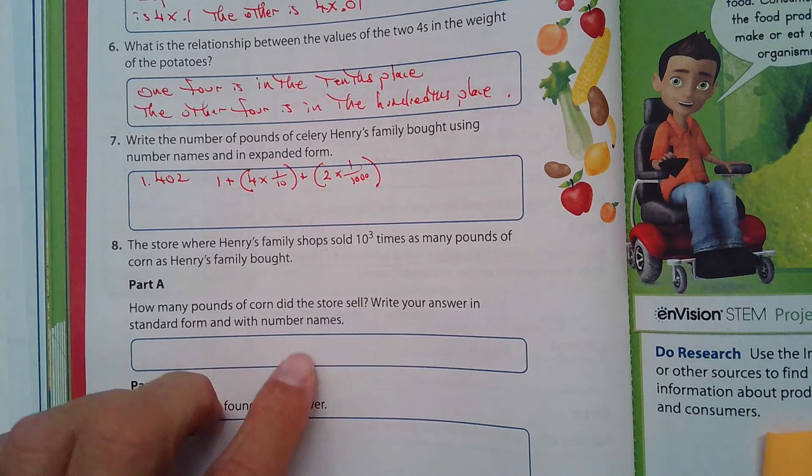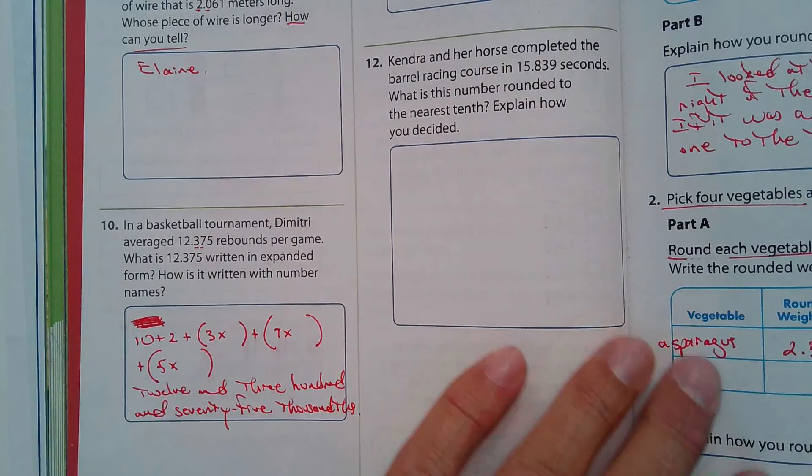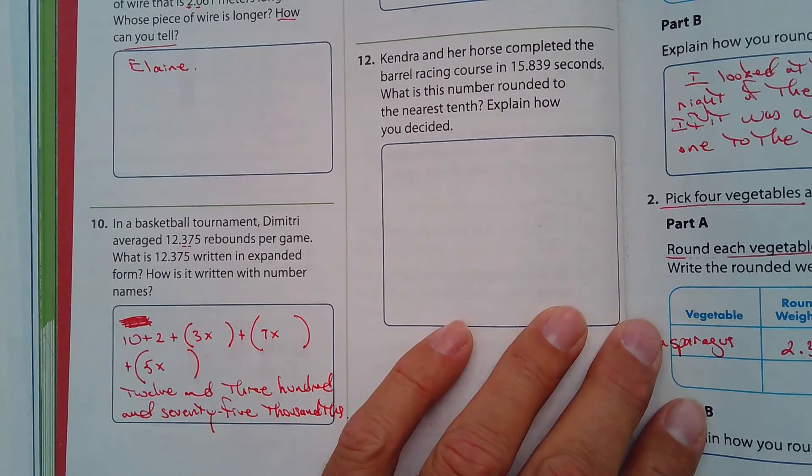Okay, how many pounds of corn did the store sell? Well, first off, how many did they buy? Henry's family bought 2.556.